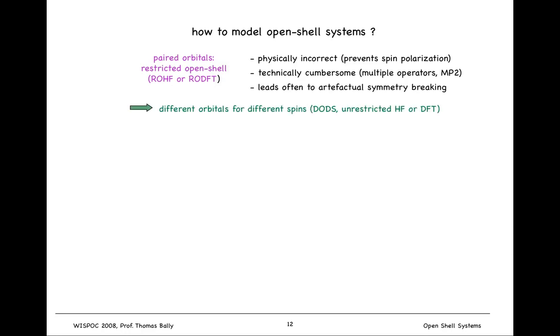The other alternative is to do something called different orbitals for different spins, DODS, but more commonly you'll hear it referred to as unrestricted Hartree-Fock or density functional theory, abbreviated with a U. So UHF would be unrestricted Hartree-Fock, meaning that you do not attempt to restrict alpha and beta orbitals even in formally doubly occupied orbitals to occupy the same space. So you can model spin polarization. It's actually quite easy to implement. You basically do two separate SCFs; you do the alpha electrons and you do the beta electrons and you solve for the orbitals of each.